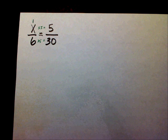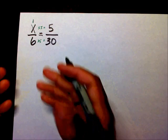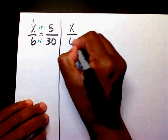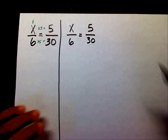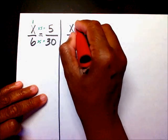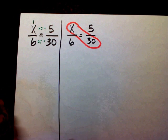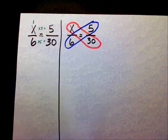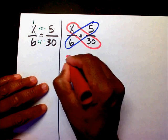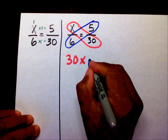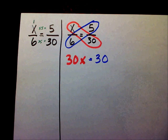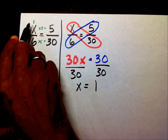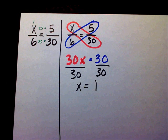But what happens when my equations or fractions are such that I can't do this mental method? Well, you would use cross multiplication. So using the same problem, I'm going to multiply x times 30, which gives 30x, then multiply 6 times 5, which gives 30. Here we have a one-step equation — divide both sides by 30, so x equals 1, just like we said.